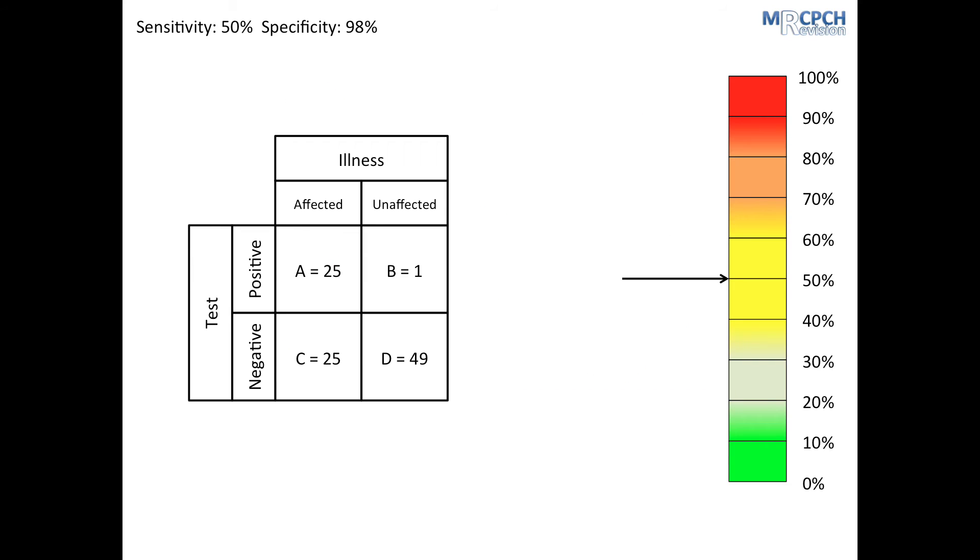We now have enough information to work out the positive predictive value. Remembering the earlier slide, we know that positive predictive value is A divided by A plus B. Here, that is 25 divided by 26, which is 0.96, or 96%.